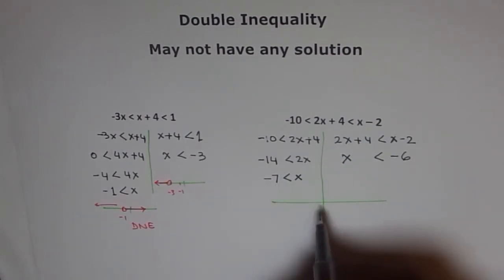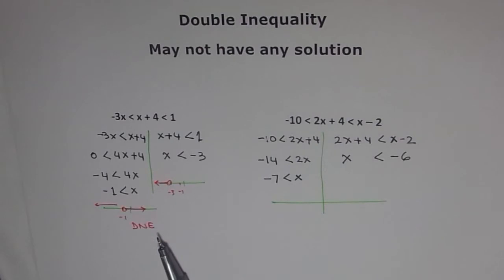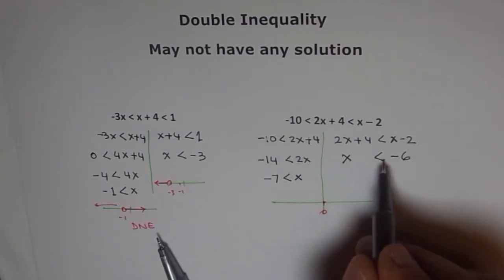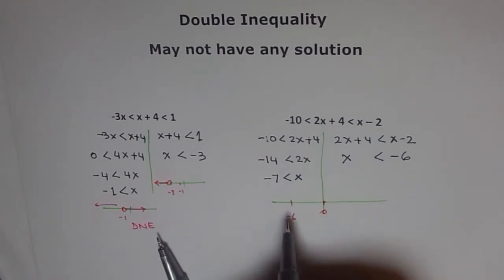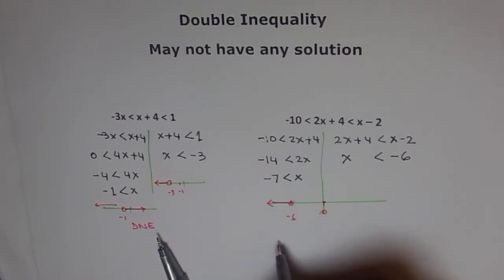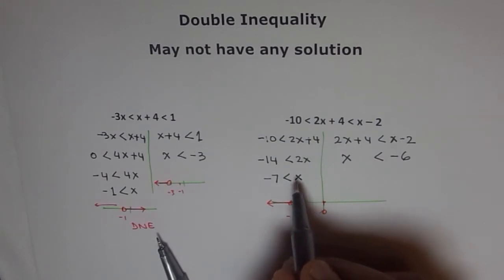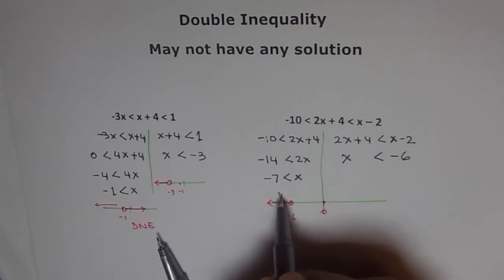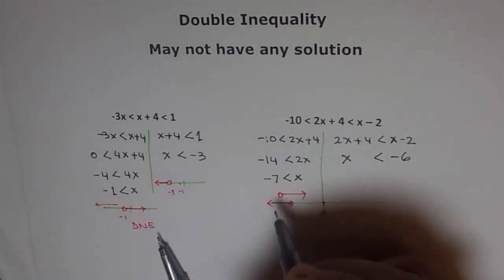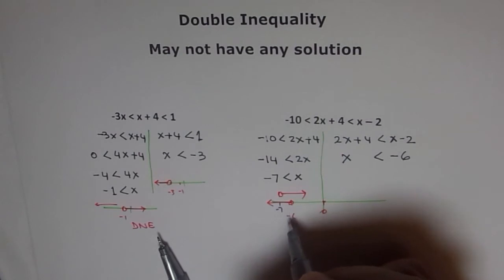Let me show this on a number line. Now, on a number line, one solution is, let's say this is 0. One solution is x is less than minus 6. Let's say this is our minus 6. Less than minus 6 means like this. And the other solution is that x is greater than minus 7. So where is minus 7? Minus 7 is here. Greater than means this side. So here, we have a common answer. And that answer is between minus 7 and minus 6.